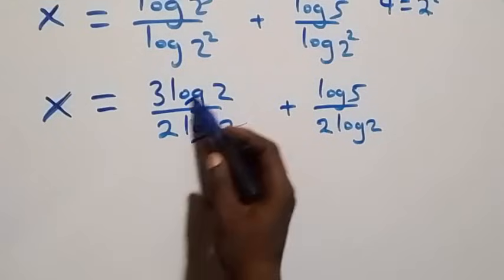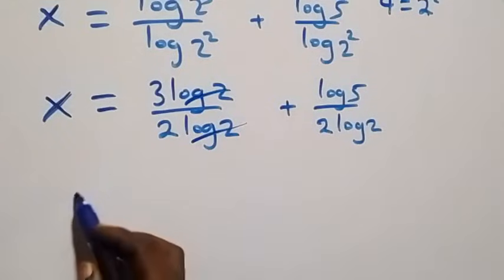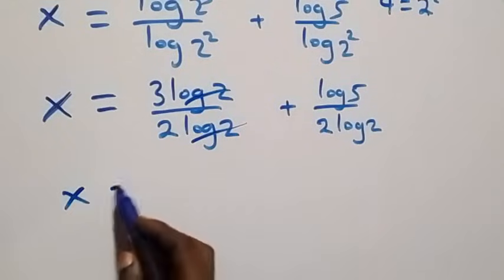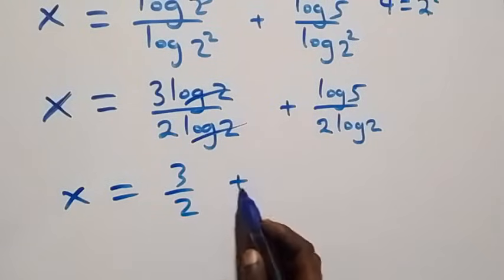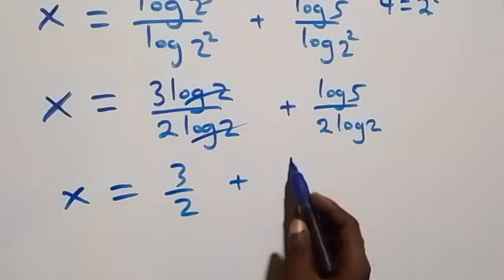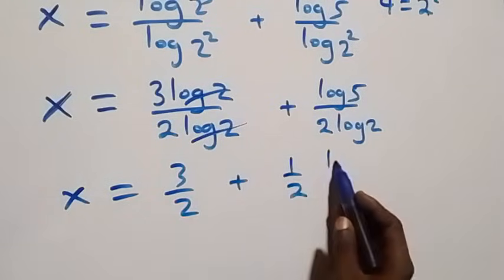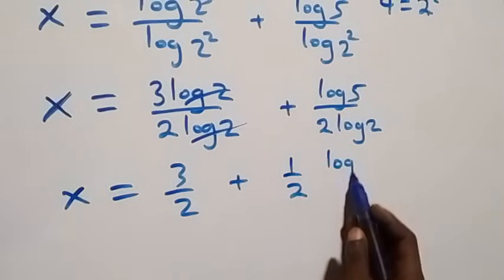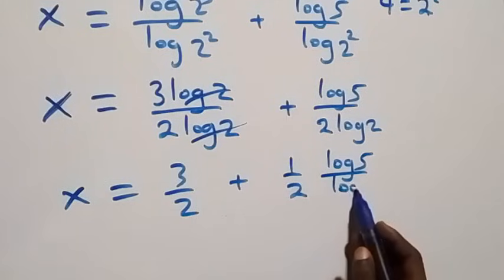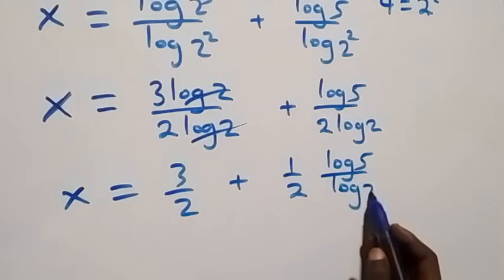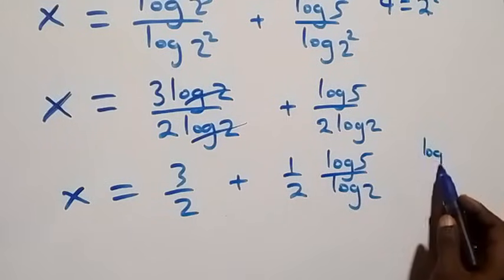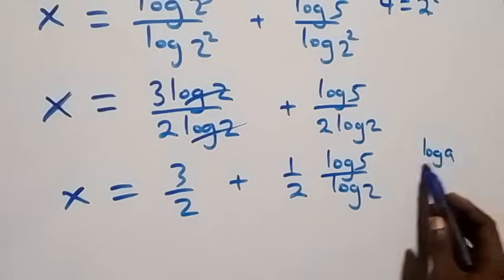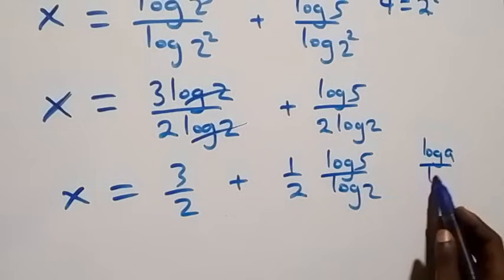Here, log 2 cancels with log 2, and we have x equals to 3 over 2 plus one half times log 5 over log 2. When we apply the change of base formula, log A over log B is the same as log base B of A.